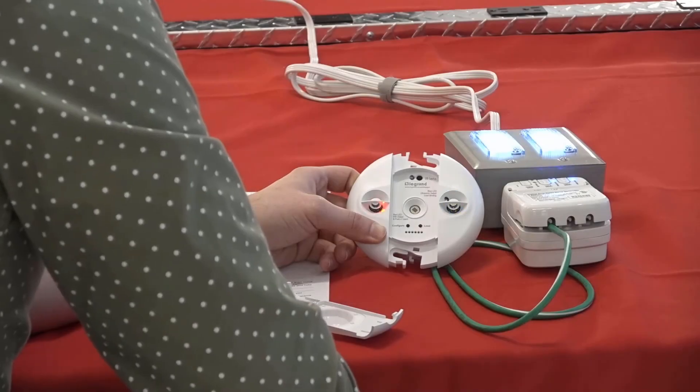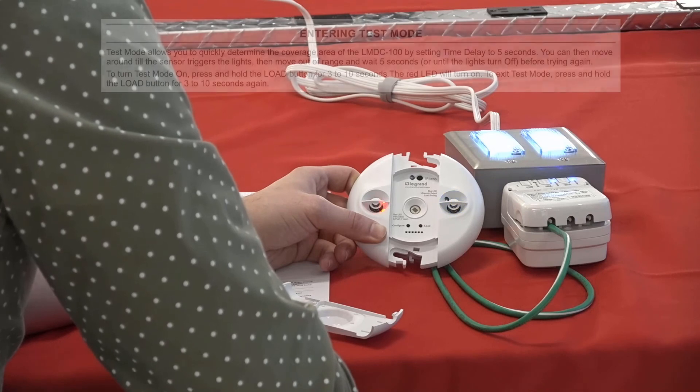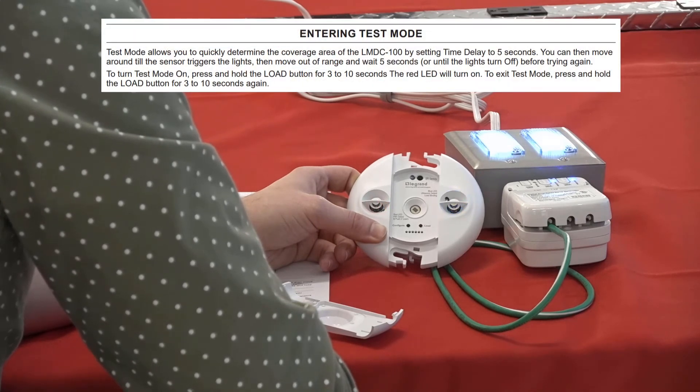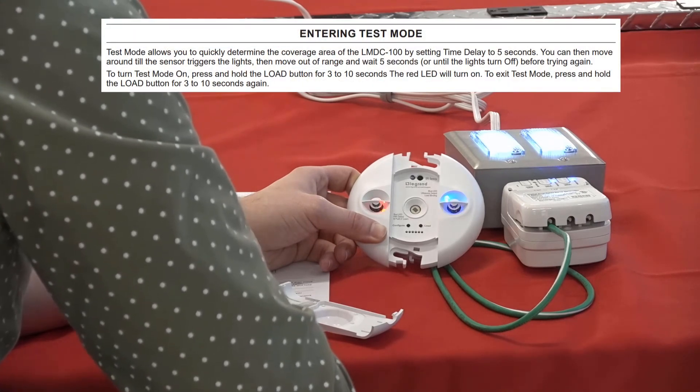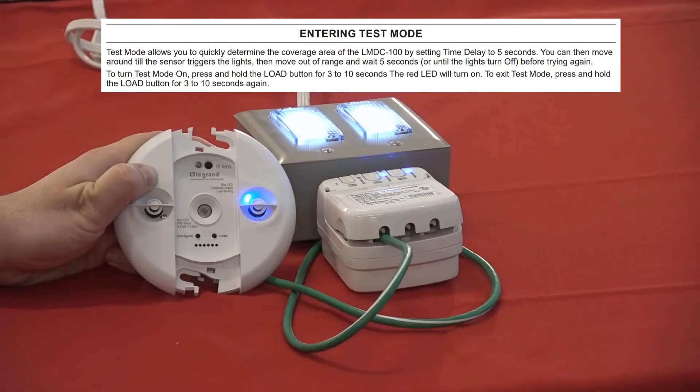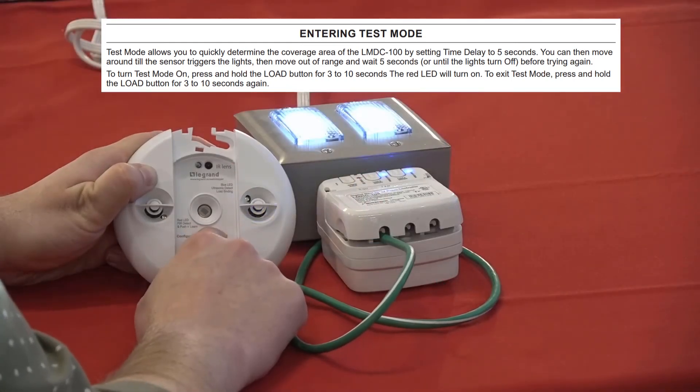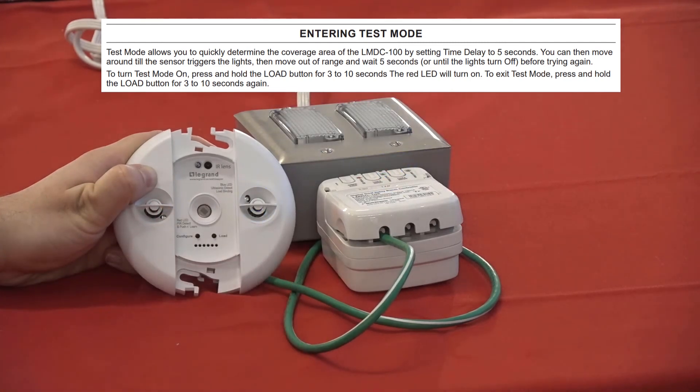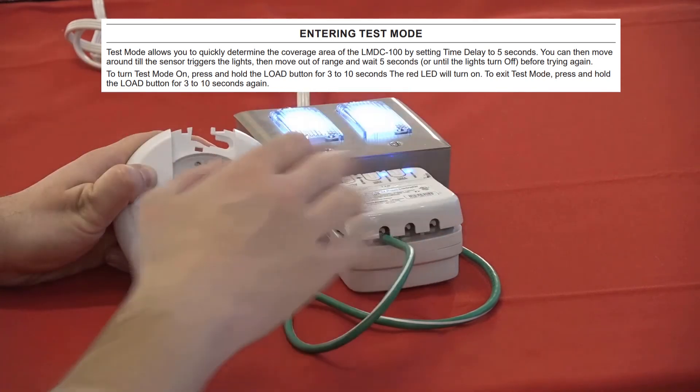Next, let's discuss utilities. Test mode is used to allow you to test the detection range of the sensor by setting time delay to five seconds. To enter test mode, press and hold the load button for any time between three and ten seconds. The red LED illuminates solidly to indicate that the test mode is active and you can release to enter the mode.